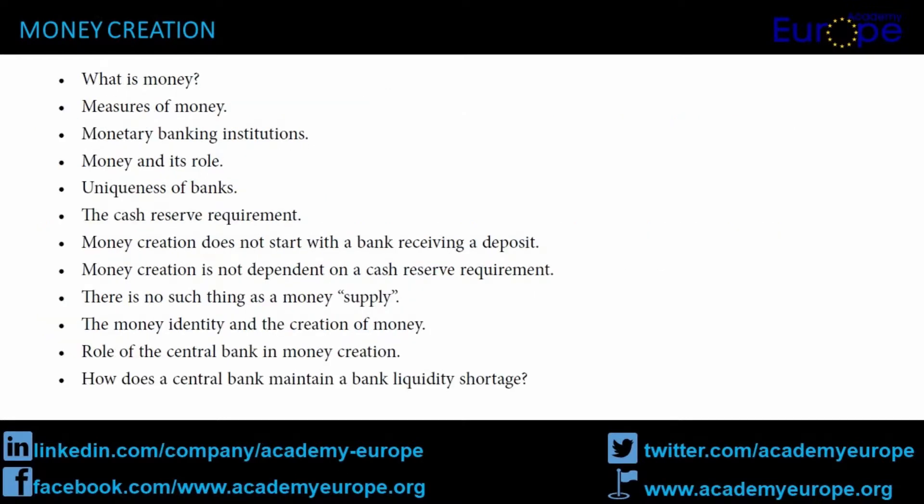These critical issues are the subject of this text, which we cover in the following sections: What is money? Measures of money. Monetary banking institutions. Money and its role. Uniqueness of banks. The cash reserve requirement. Money creation does not start with a bank receiving a deposit. Money creation is not dependent on a cash reserve requirement. There is no such thing as a money supply. The money identity and the creation of money. Role of the central bank in money creation. How does a central bank maintain a bank liquidity shortage?